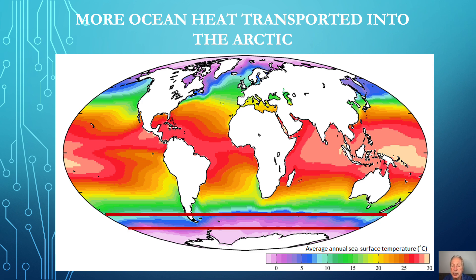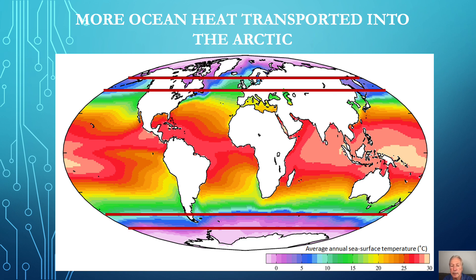Between 50 and 60 degrees south latitude, temperatures are much lower, averaging between 5 and 0 degrees centigrade. Due to the Antarctic circumpolar current, the warmer subtropical waters averaging about 10-plus degrees centigrade, seen in green, can't intrude further south, preventing any warming of Antarctica — the Antarctic refrigeration effect. In contrast, between 50 and 60 degrees north, warm subtropical waters intrude deep into the Arctic.